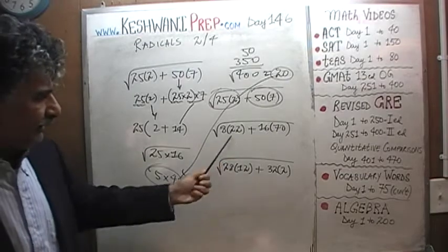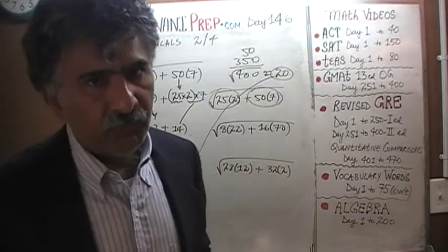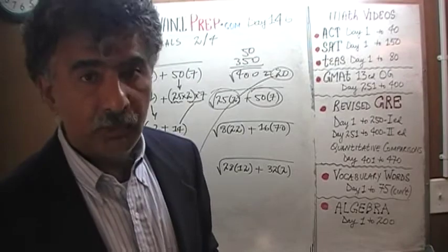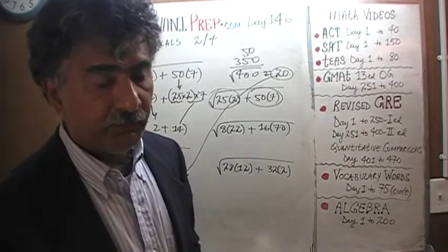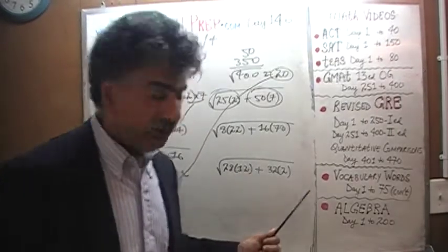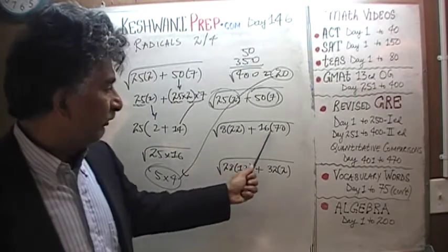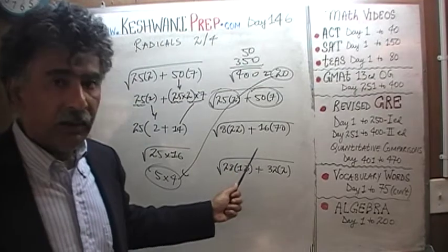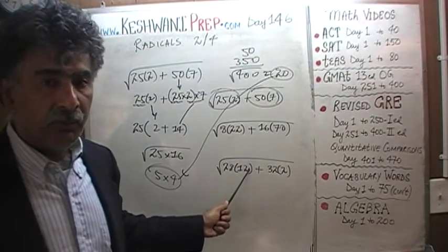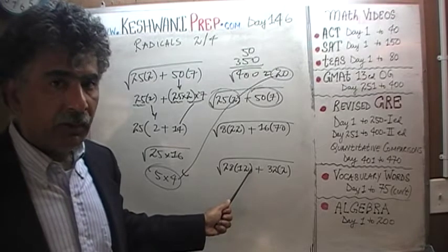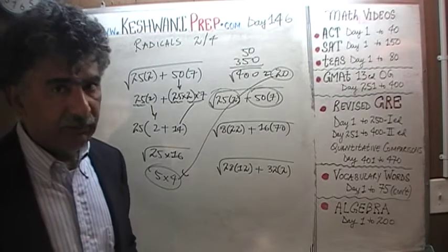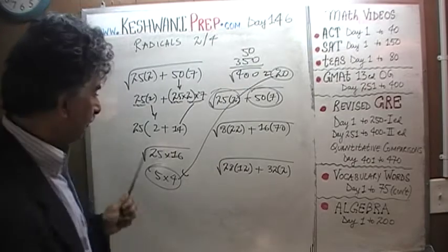But when we get something like this, obviously, we cannot use brute force. We could use brute force, but that will take forever. Here we have to have a strategy. Not only would it take forever to multiply 8×22 and 16×70, but once you do that, and when you add up the two figures, you're going to end up with a huge figure. And figuring out the square root of that quantity is not that easy. We have to have some strategy. Let's do them together.